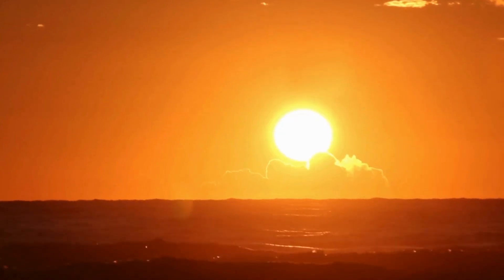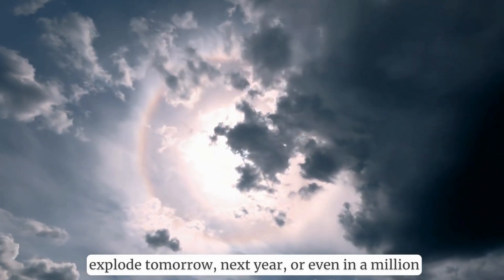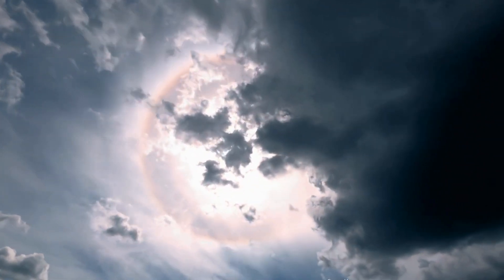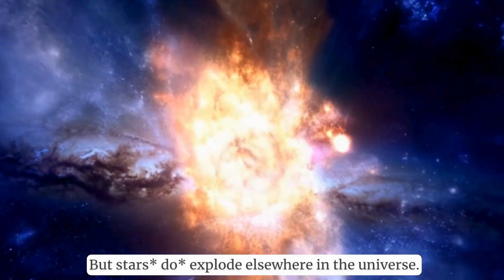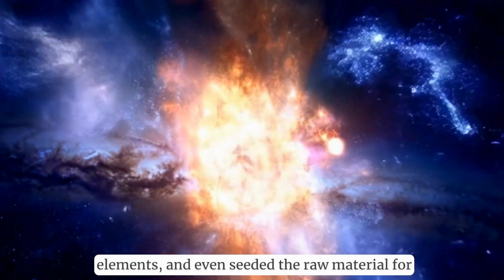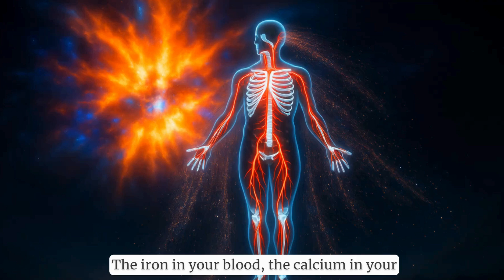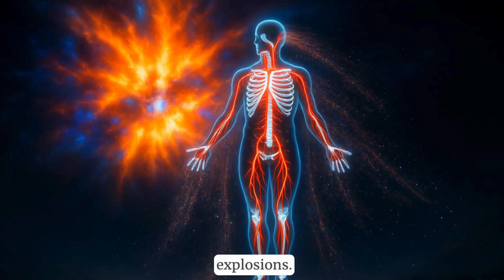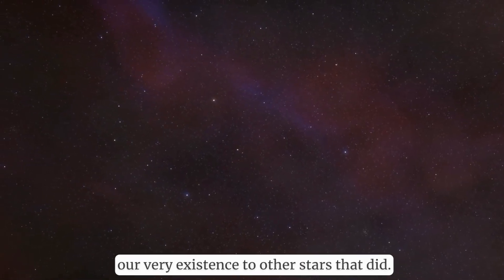Here's the good news: the Sun is remarkably stable. It's not going to explode tomorrow, next year, or even in a million years. Its life cycle is well understood, and we have billions of years before it truly changes. But stars do explode elsewhere in the universe. Supernovae have shaped galaxies, created heavy elements, and even seeded the raw material for life. The iron in your blood, the calcium in your bones, all of it was forged in ancient supernova explosions. So while the Sun won't go out with a bang, we owe our very existence to other stars that did.